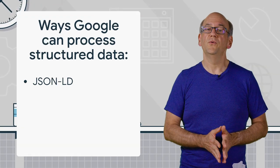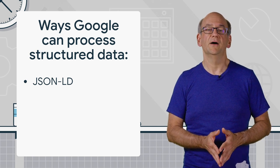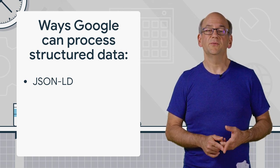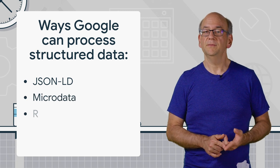JSON-LD is one of the ways that Google can process structured data on a web page. The other supported formats are microdata and RDFA. RDFA is an HTML5 extension that supports linked data through additional attributes added to existing HTML tags on the page. Microdata is an open community HTML specification used to nest structured data within HTML content. Like RDFA, it also uses HTML tag attributes for this.